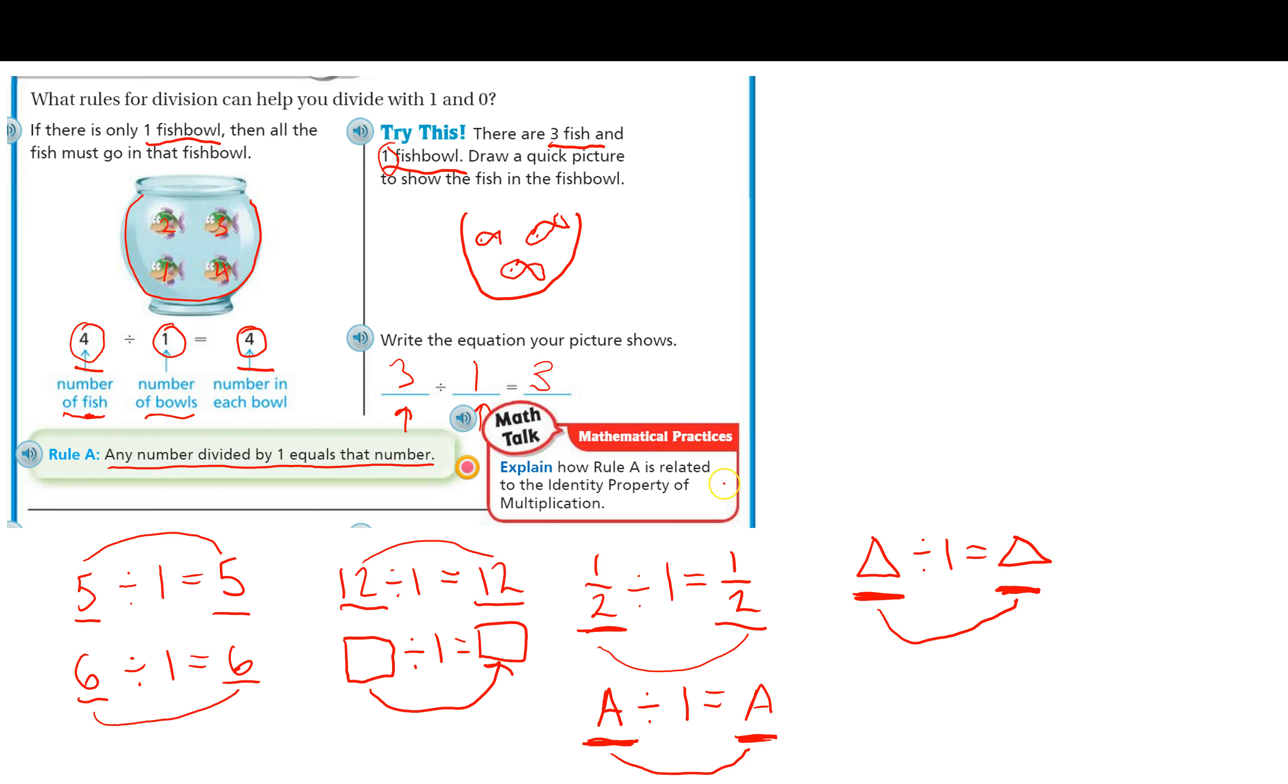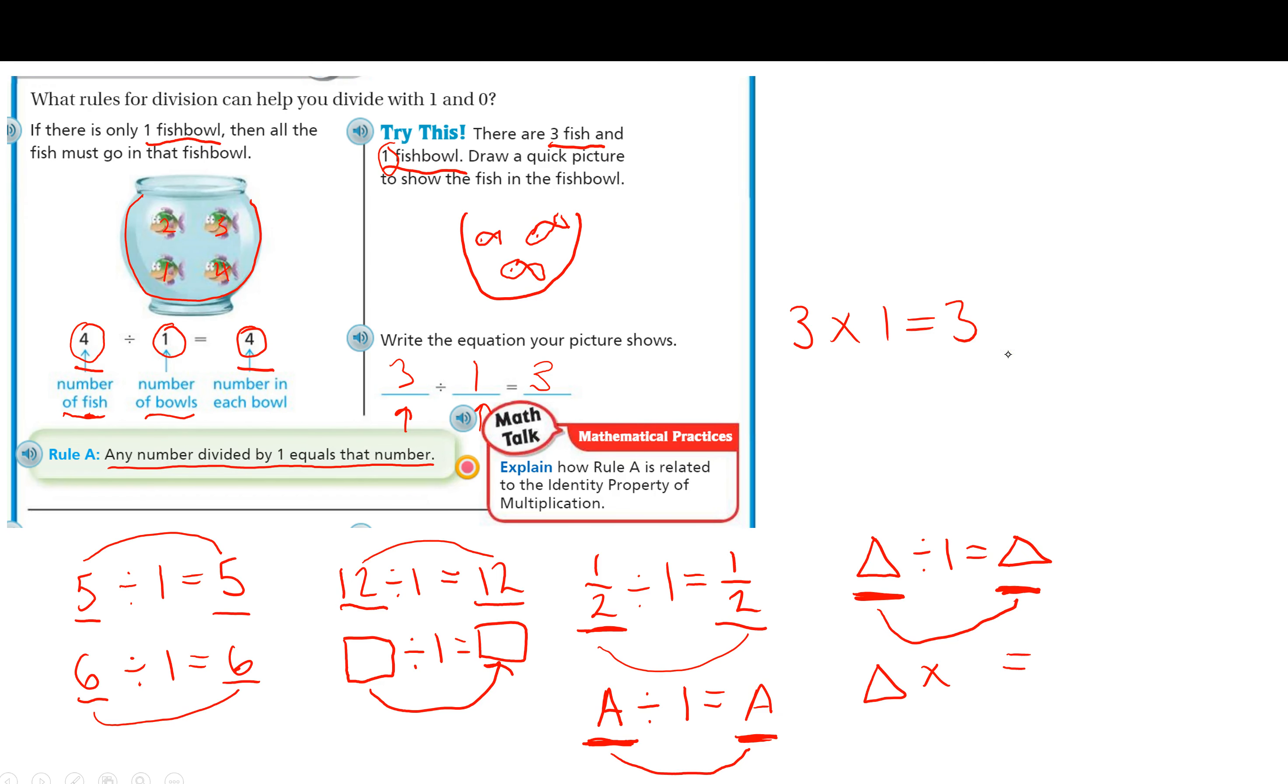Now, math talk, let's look at this. How is this related to the multiplication rule? Well, it's basically identical, because if we take any number times 1, we also get that same number. Triangle times 1 is going to equal triangle, just like triangle divided by 1 equals triangle. So it's basically the same property that you learned in multiplication. It also applies to division as well.